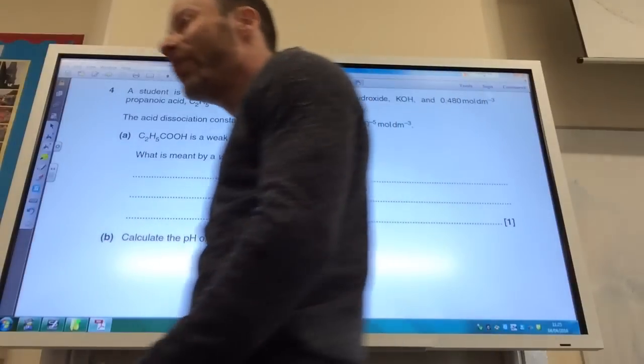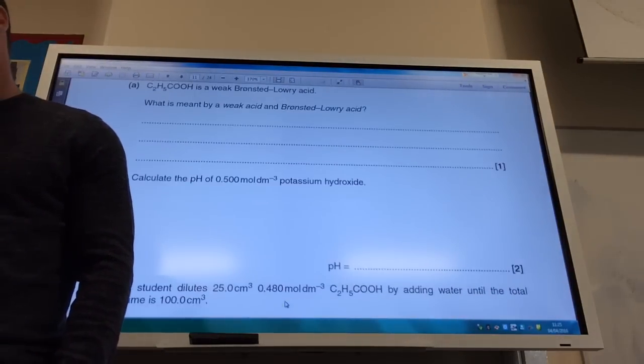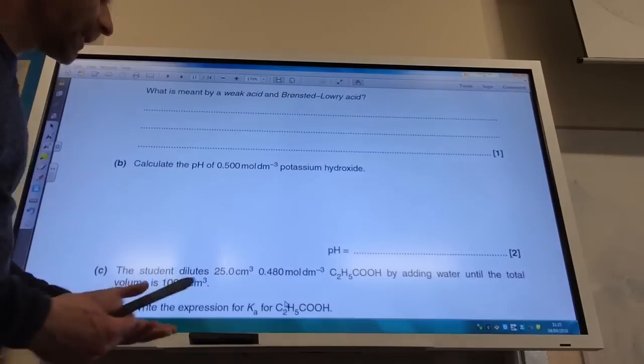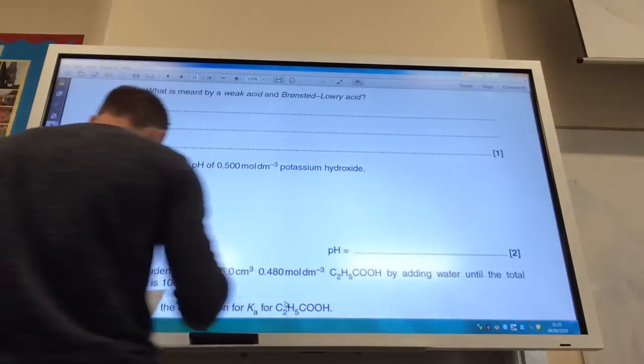Calculate the pH of the potassium hydroxide, 0.5 potassium hydroxide. You can do this in various ways. So this is the way I tend to do it.